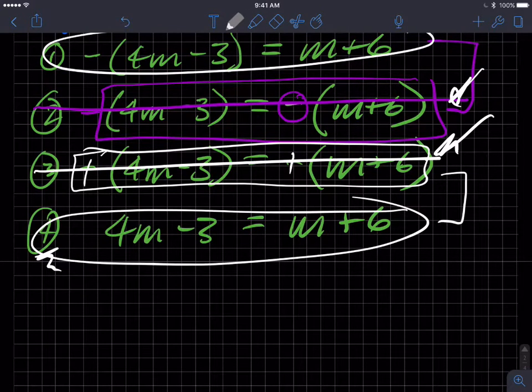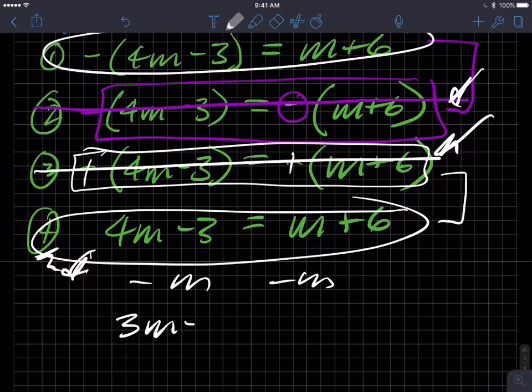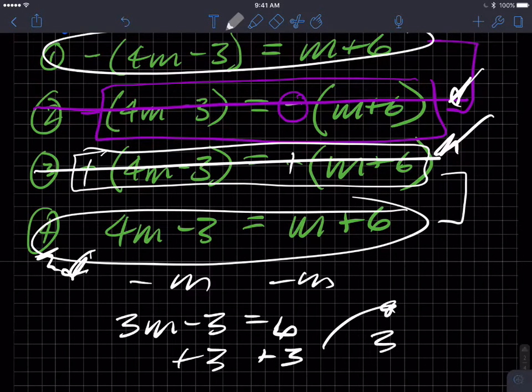Let's go take a look at finishing this. So I have, I guess I'll do this one because it's easier, it's right here. 4m minus, so I'm going to subtract m from both sides, and I'll get 3m minus 3 equals 6. Add 3 to both sides, and I get 3m equals 9, divide both sides by 3, and I get m equals 3.